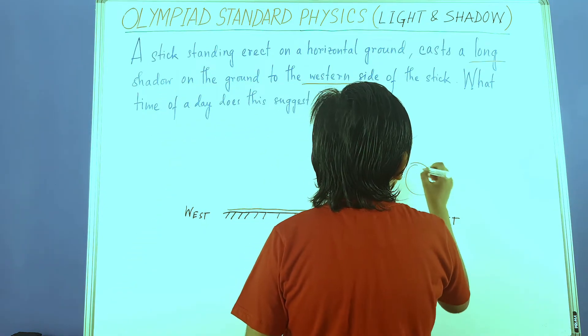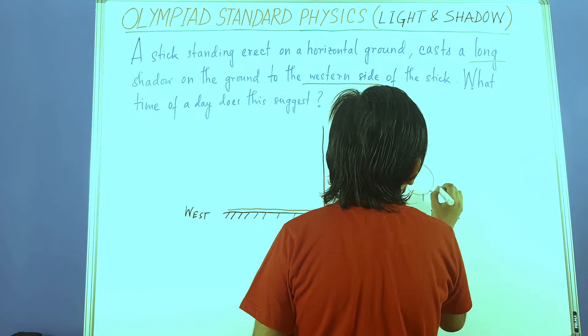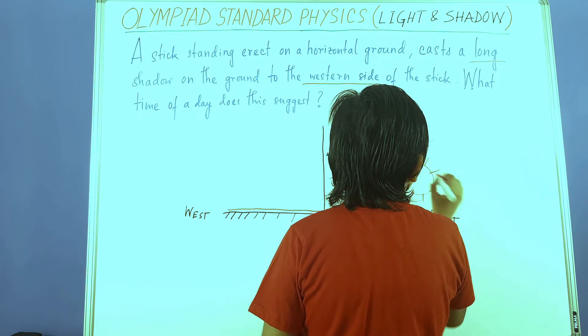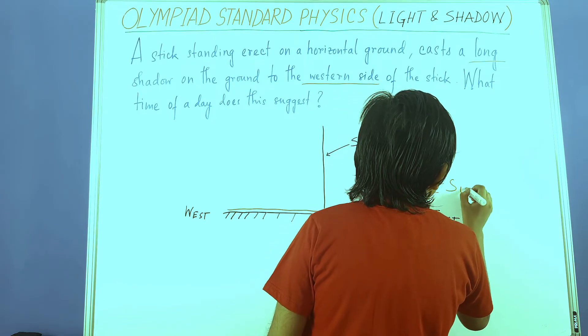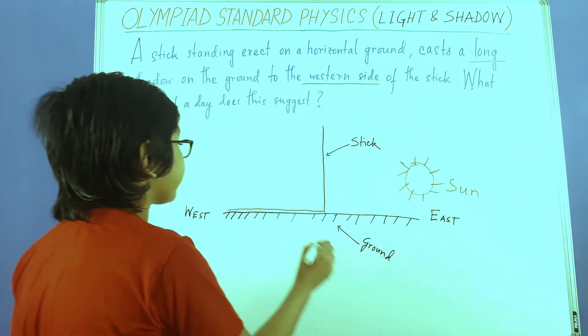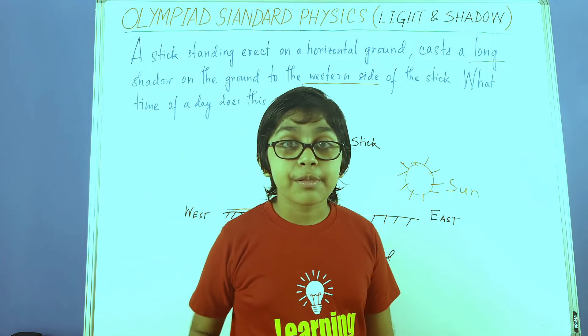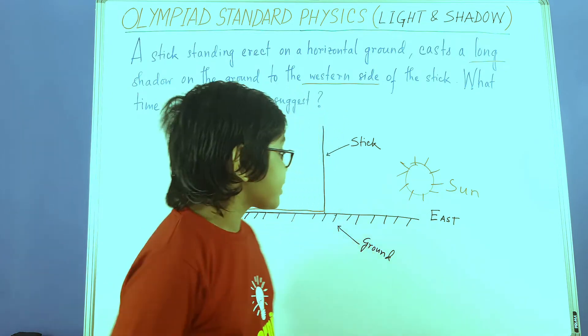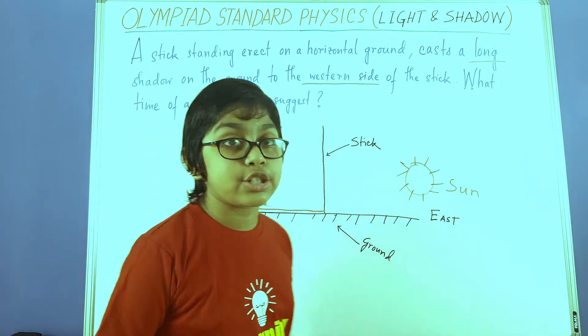That means the sun must be somewhere over here. This is the sun. So, here's the light source. It's very near to the horizon, forming a very long shadow. And as I explained to you why it's happening, here's the light source and here's the shadow.